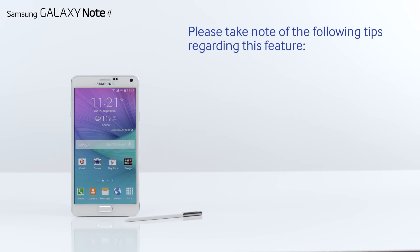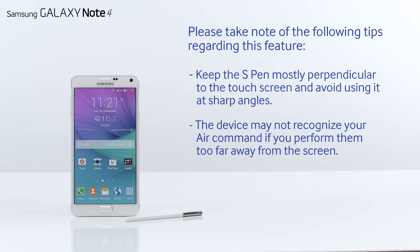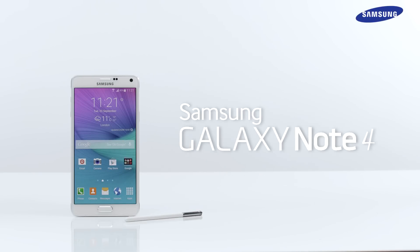Please take note of the following tips regarding this feature. Keep the S-Pen mostly perpendicular to the touchscreen and avoid using it at sharp angles. The device may not recognize your Air Command if you perform them too far away from the screen. Only press the S-Pen briefly to activate Air Command. That's it! You've just learned how to use the multi-window and pop-up window feature of your Galaxy Note 4.